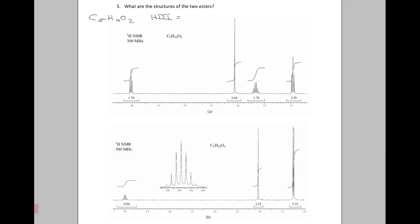Question number five: what are the structures of the two esters? Both esters have the same molecular formula, C5H10O2. They both have an HDI of one, and they're esters, so we know that that HDI comes from the carbonyl, the C double bond O.